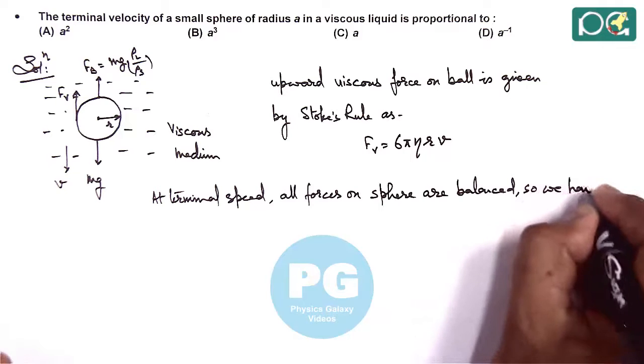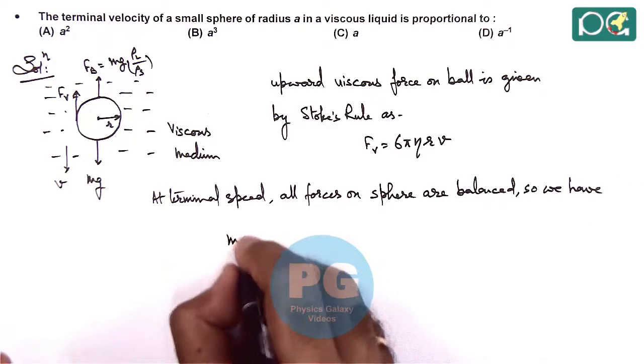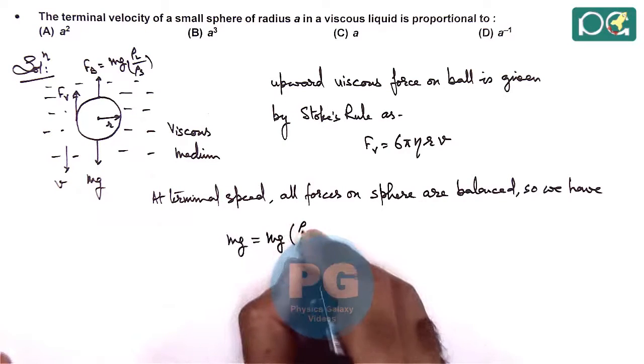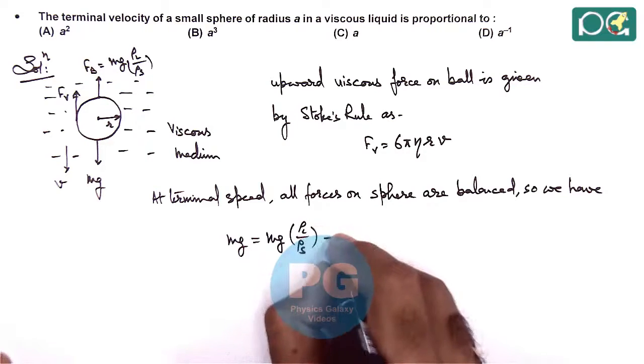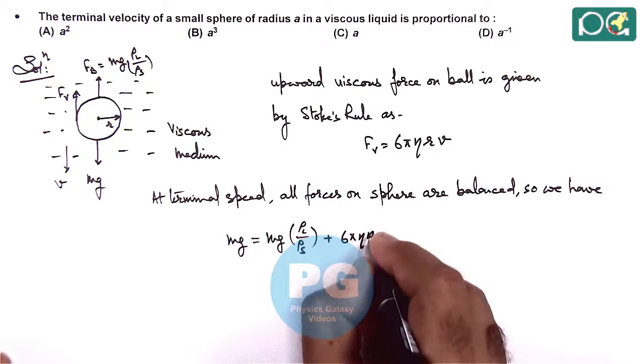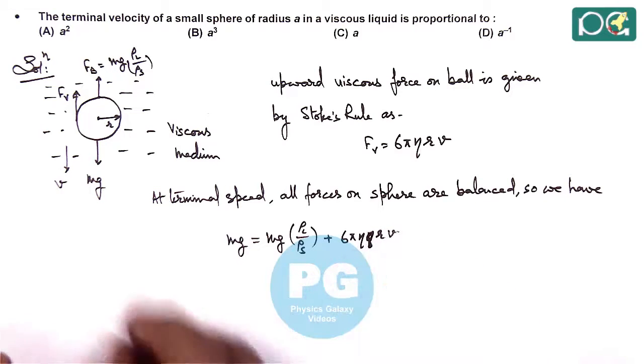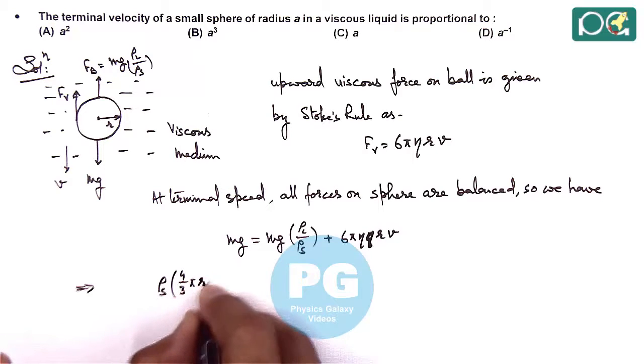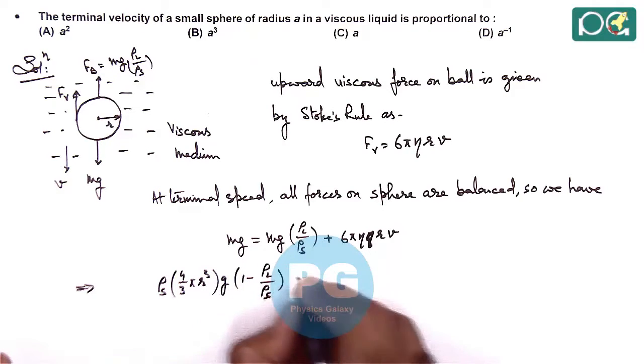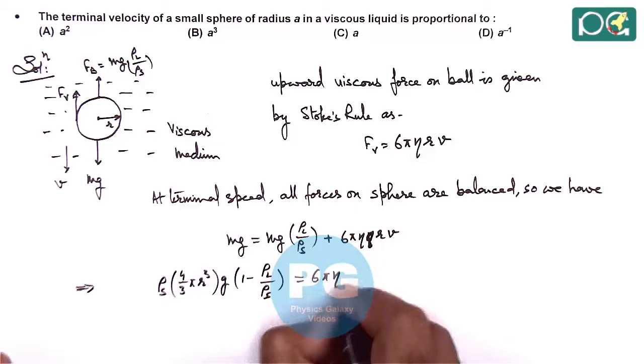So we have in this situation we can write downward force is Mg which is equal to Mg ρL by ρS plus the viscous force 6πηRv. Mass can be rewritten as density of solid into 4 by 3 πR³ multiplied by g(1 minus density of liquid by density of solid) is equal to 6πηRv.